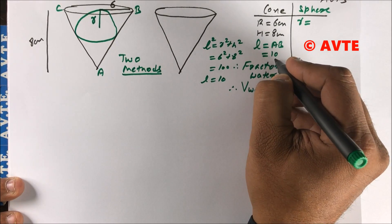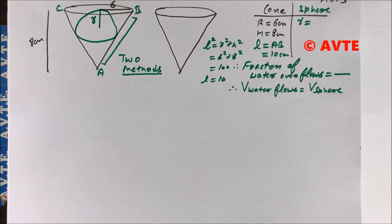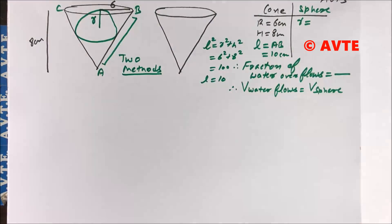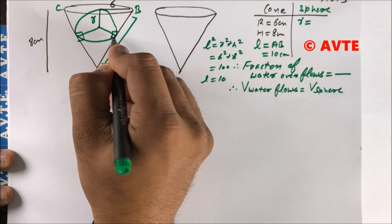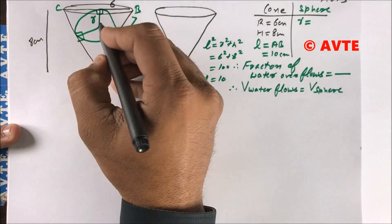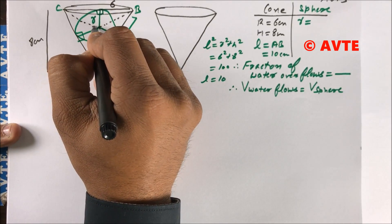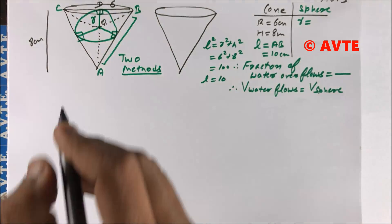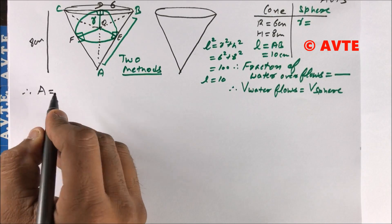So L equals 10 centimeters. The first method to find the radius of the sphere uses the tangent property. These are all tangents, so this is also R, this is also R, this is also R. We can make three triangles.